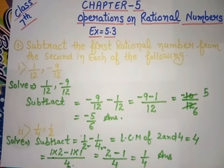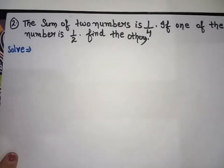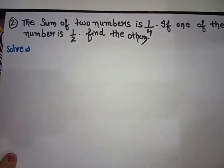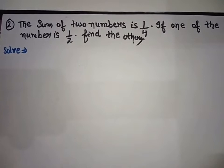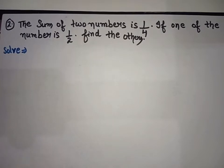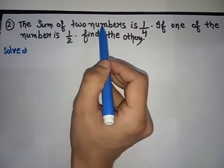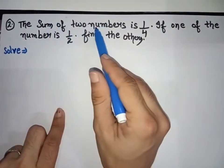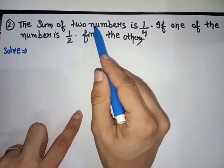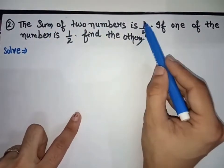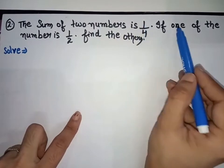Second word problem: the sum of two numbers is 1 over 4. If one of the numbers is 1 over 2, find the other. Here, the sum of two numbers — meaning we add two numbers — is given as 1 over 4. One number is 1 over 2.